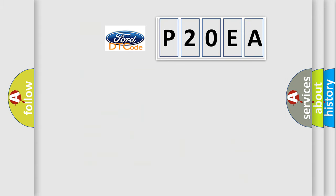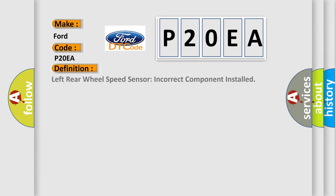The number itself does not make sense to us if we cannot assign information about what it actually expresses. So, what does the diagnostic trouble code P20EA interpret specifically for Infiniti car manufacturers? The basic definition is: left rear wheel speed sensor — incorrect component installed.